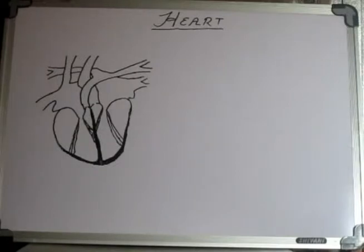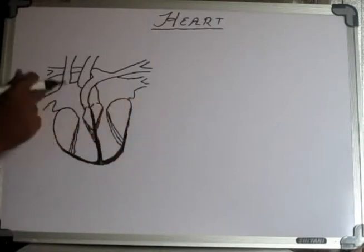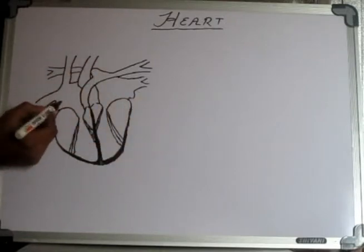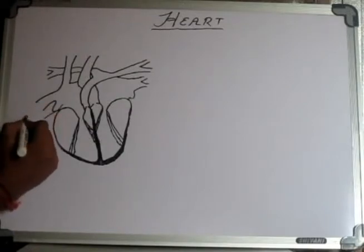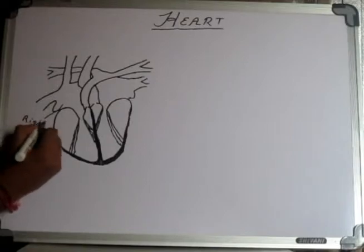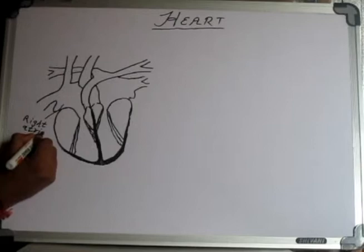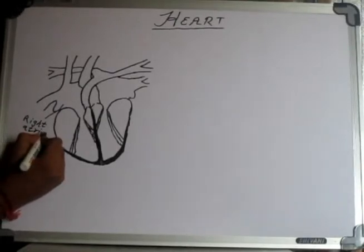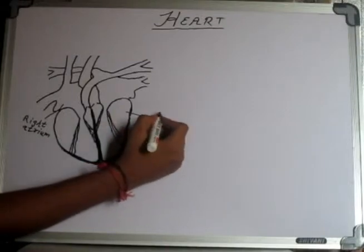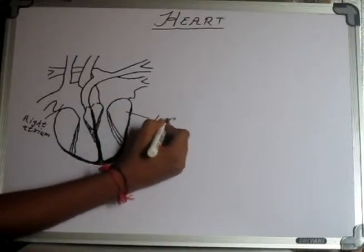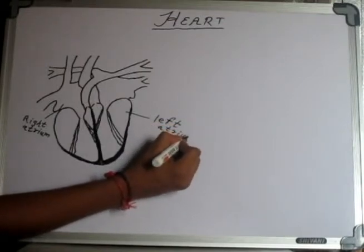These upper chambers are called atria, and the singular form is called atrium. This is called the right atrium, and the deoxygenated blood from all the different organs of the body comes into the right atrium. Similarly, this is called the left atrium — actually, I was a little bit nervous while labeling this. So the left atrium is a little bit upward, as you can see on the right side.